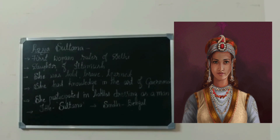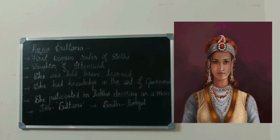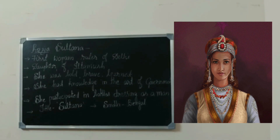Now we will learn about Razia Sultana, who was the first woman ruler of Delhi. She was the daughter of Iltutmish. Her character was bold, brave, and learned. As she was learned, she had complete knowledge about the government — how to rule, how to control the people, etc. She used to take part in all the battles dressing as a man. Appreciating her courage, she was given the title of Sultana. She ruled from Sindhu to Bengal.